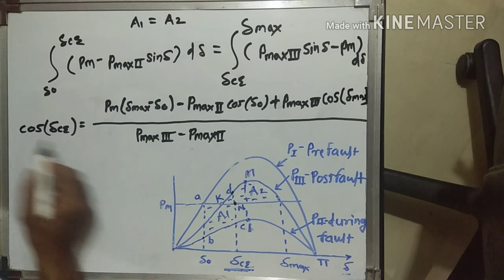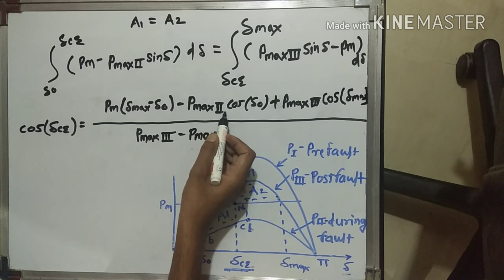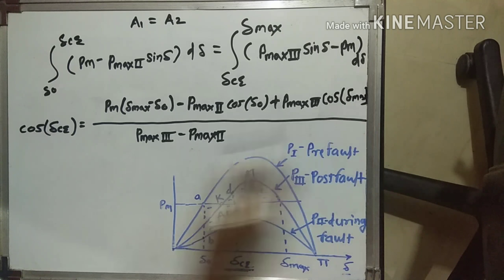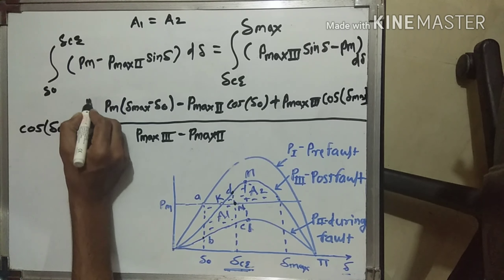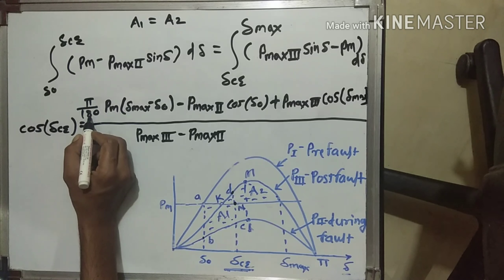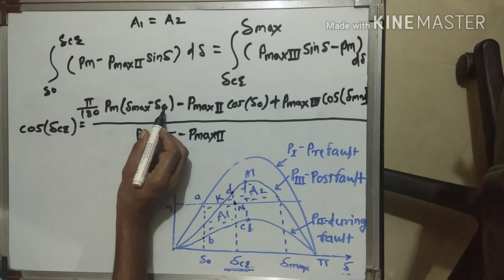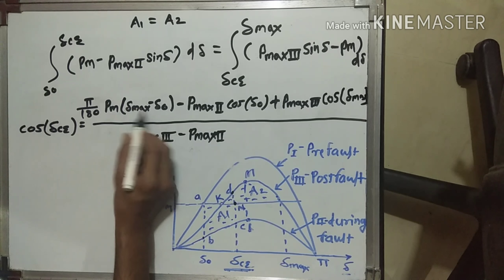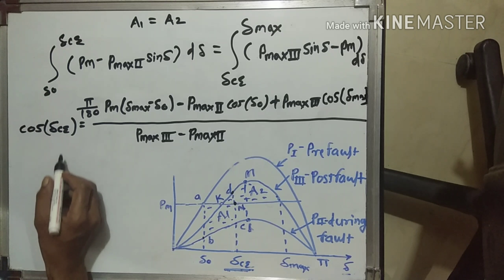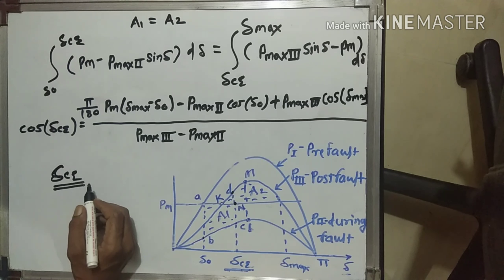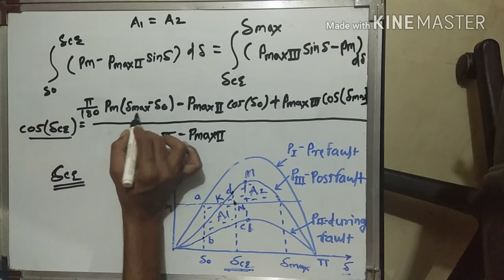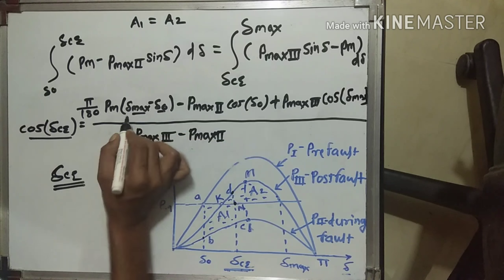After solving the integration, we get: cos del CR equals PM times (del max minus del0) times (pi divided by 180), minus Pmax2 cos del0, plus Pmax3 cos del max, all divided by (Pmax3 minus Pmax2). Note that pi divided by 180 is only multiplied to PM times (del max minus del0). Take all values of del0 and del max in degrees. After taking the cos inverse of the whole term, we get del CR — the critical clearing angle — in degrees. To find cos del CR, we need to know del max and del0.